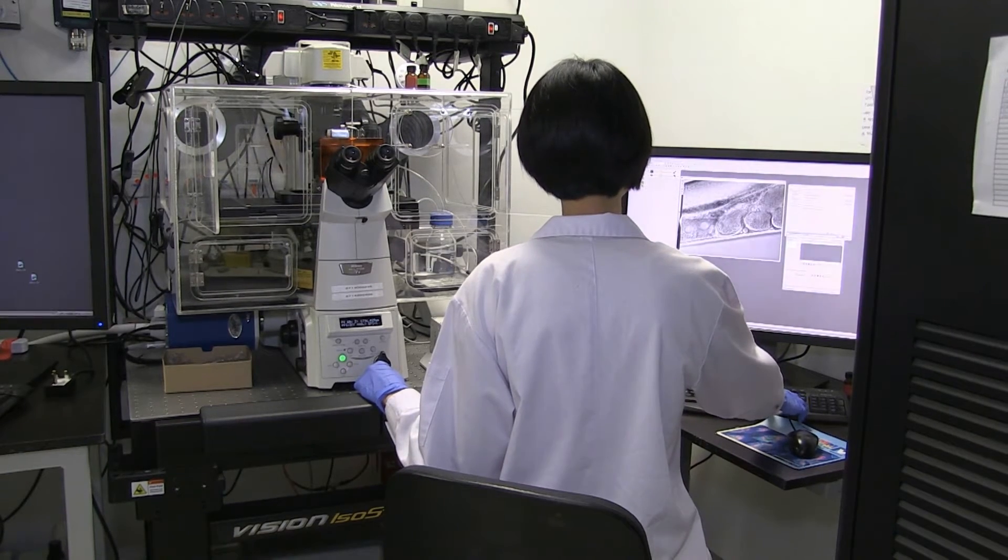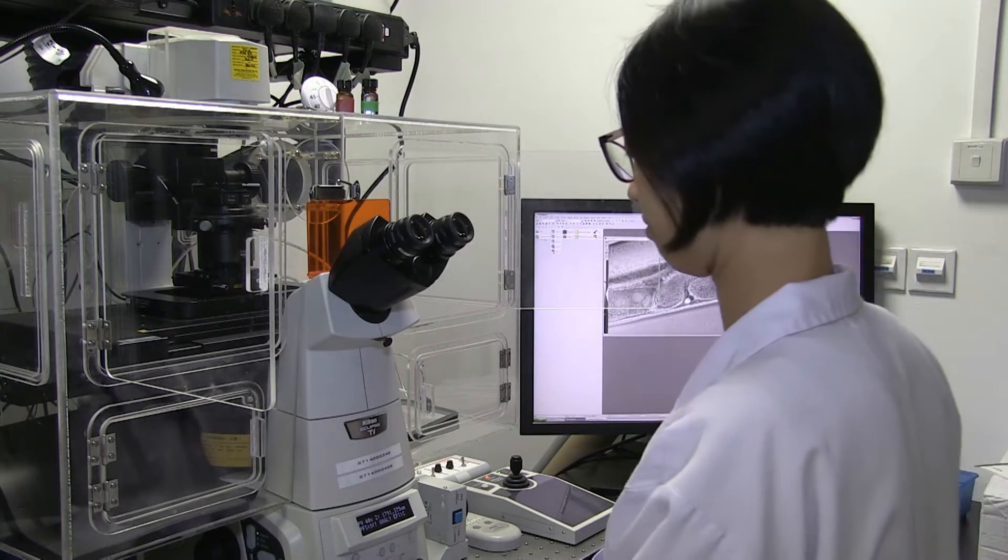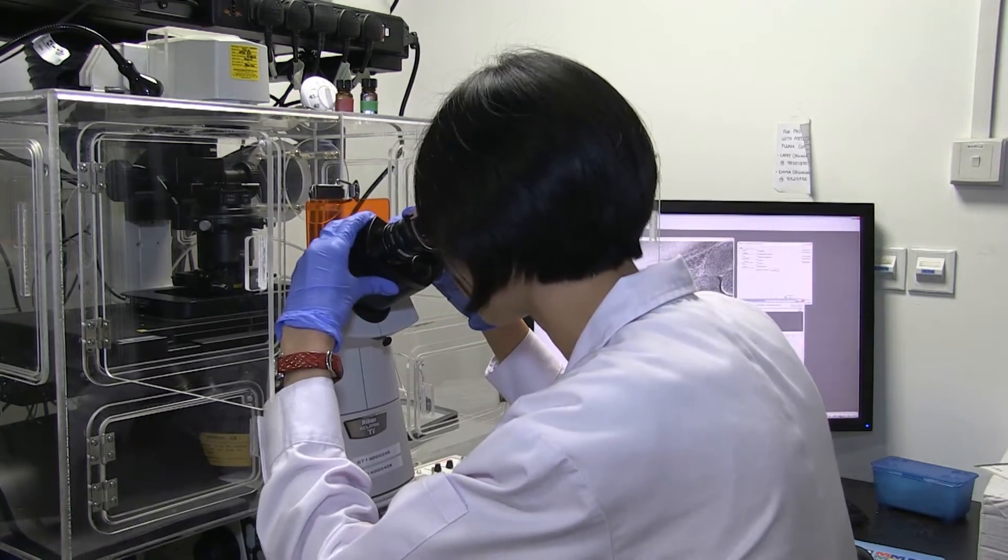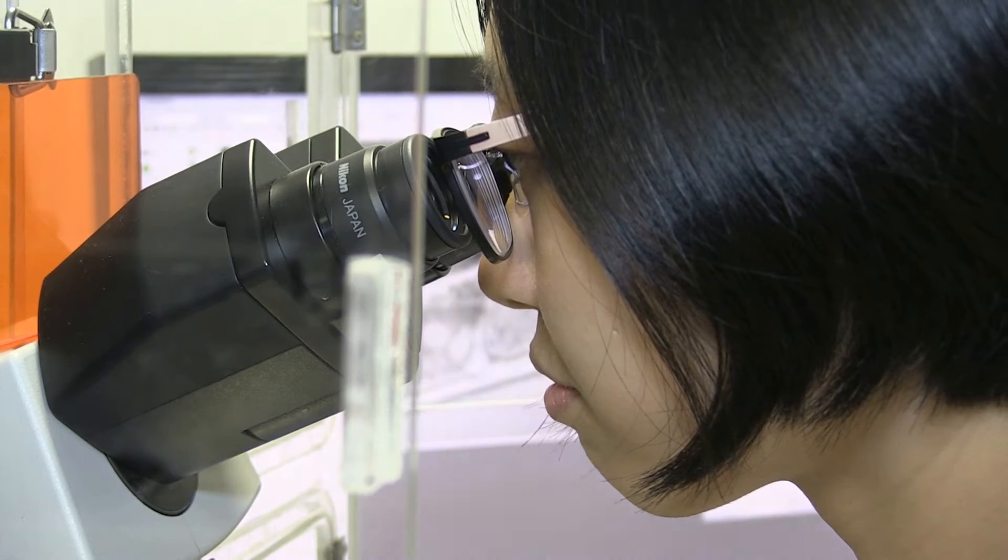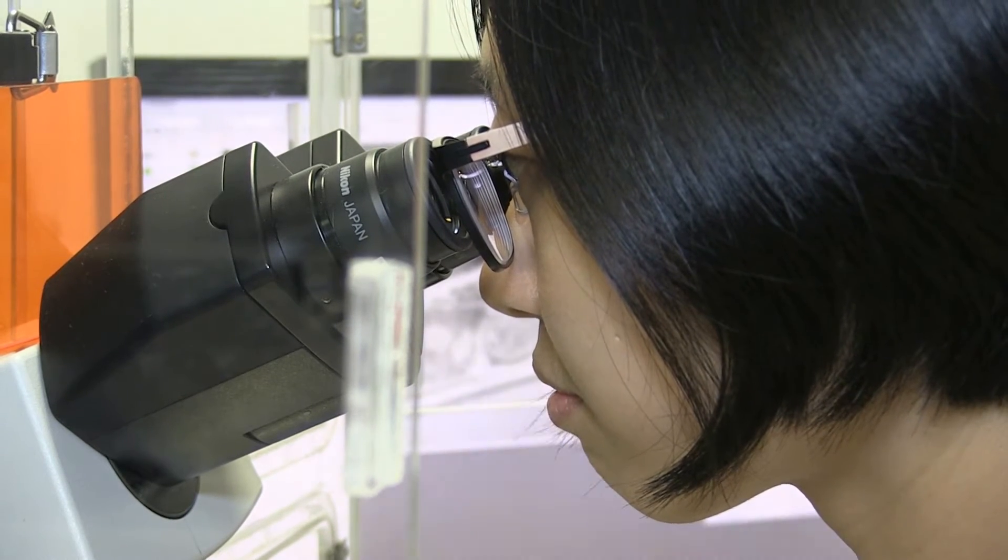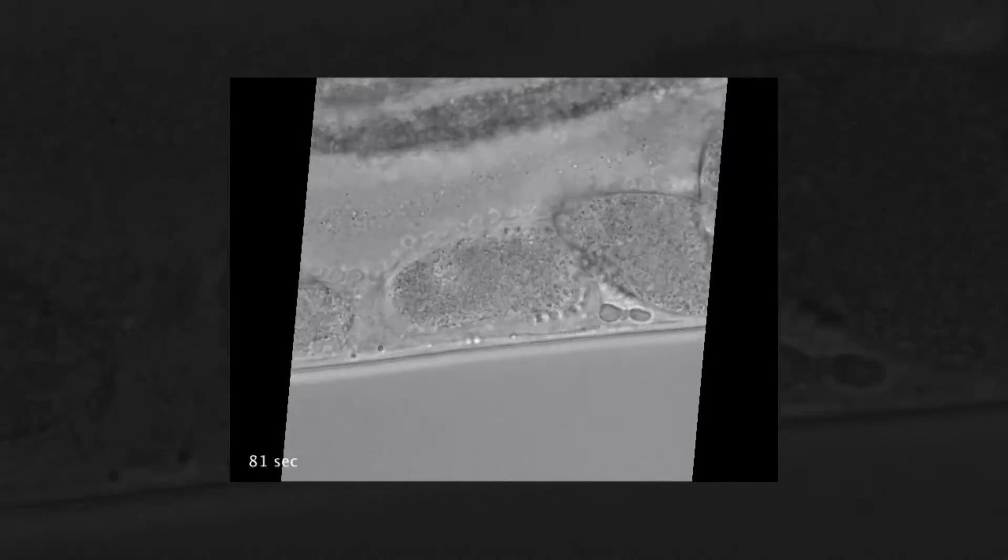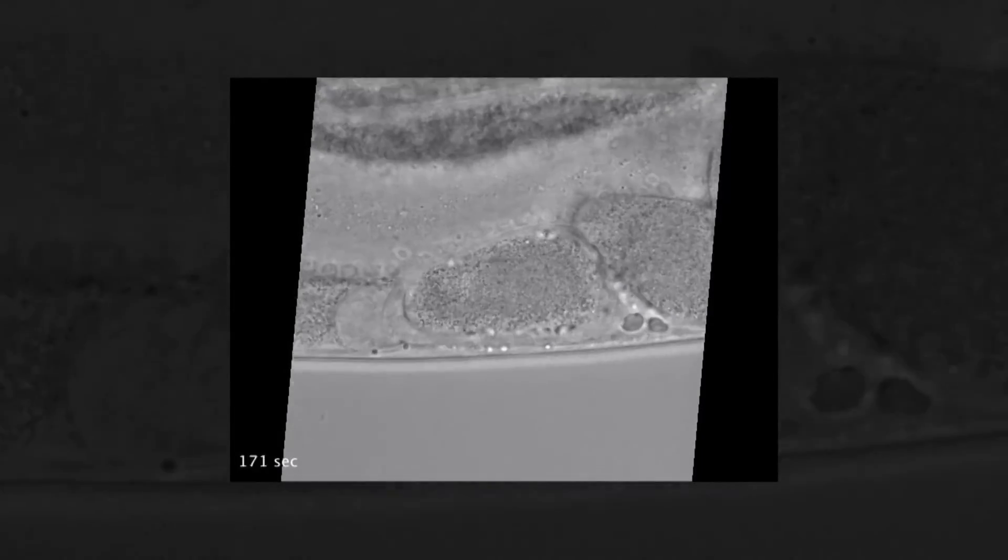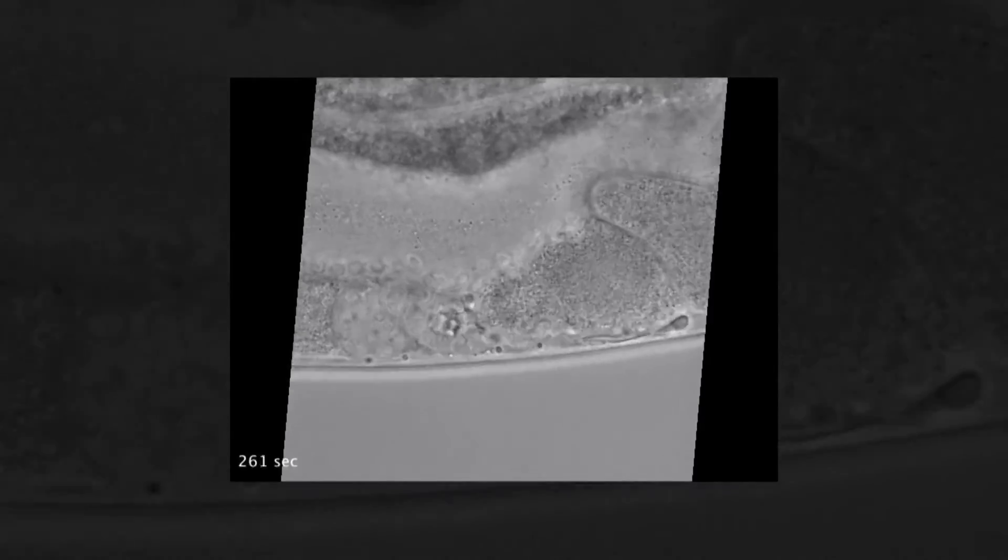And so my student, Pei Tan, did a screen where she knocked down different Rho-Gefs and Gaps in the worm and looked at how they affect embryogenesis. And one particular Rho-Gap, when she knocked it down, 50% of the embryos died.